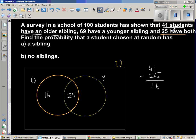And 69 have younger siblings. So this total area, the yellow circle, should have 69. So you have already included 25, so I should go 69 minus 25, which is 44. So I should write 44 here.